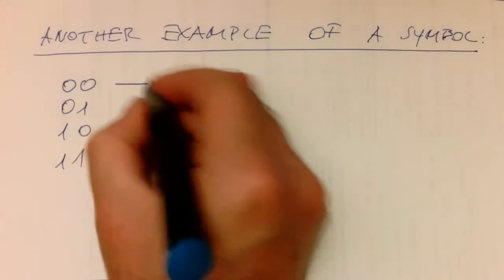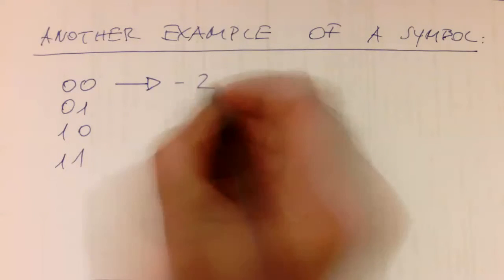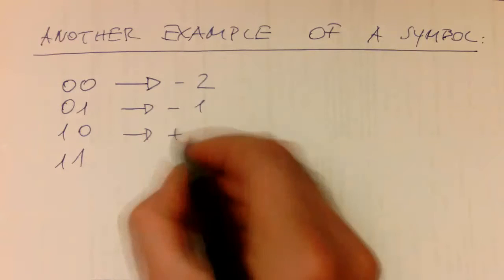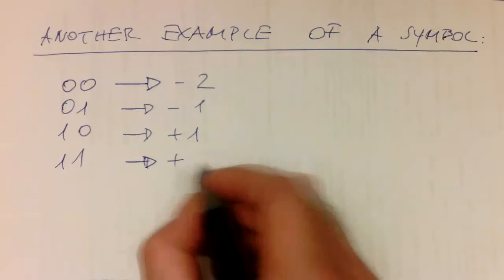We turn that into minus two, this one into minus one, this here into plus one, and this one here into plus two.